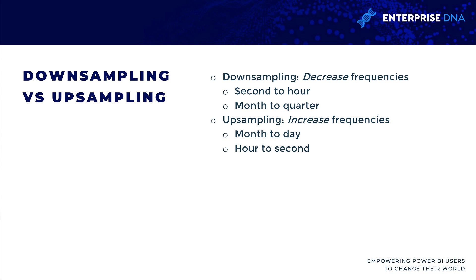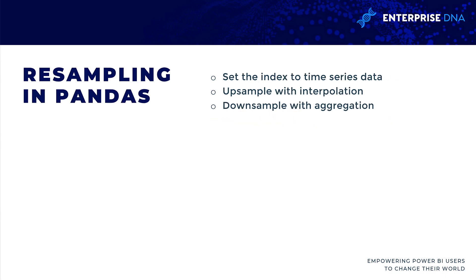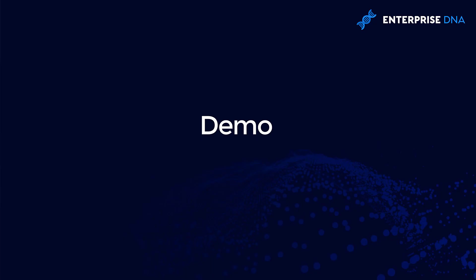Upsampling is to increase the frequency. That would be going from the month level down to the day, so we're going to have more observations in that case. In pandas, we're first going to change the index to our time series column, set our index to that time, and then we can upsample using interpolation to fill the values, or downsample by aggregating the values. This is probably best done with a demo, so let's go over to Jupyter Notebooks with Python and pandas.